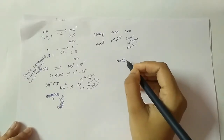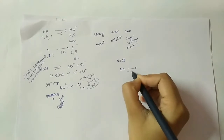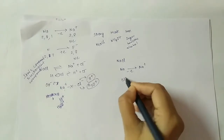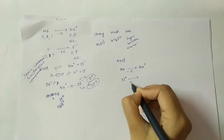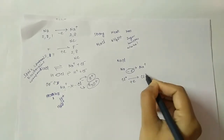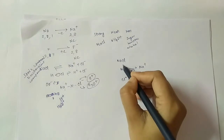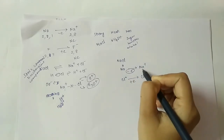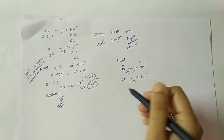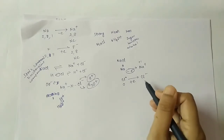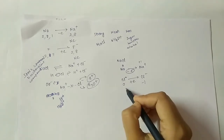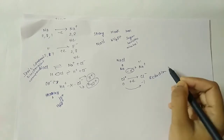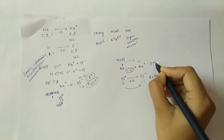Taking NaCl as an example: sodium releases one electron from its outermost shell and becomes Na+. Chlorine accepts this electron and becomes Cl-. The oxidation number of sodium changes from 0 to +1 - an increase, so this is oxidation. The oxidation number of chlorine changes from 0 to -1 - a decrease, so this is reduction. These changes confirm there is a chemical change during electrolysis.